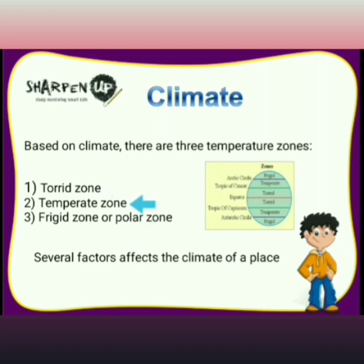The second zone is the temperate zone, where the sun is never directly overhead and the climate is mild, generally ranging from warm to cool. The four annual seasons — spring, summer, autumn, and winter — occur in these areas. The north temperate zone includes Great Britain, Europe, northern Asia, North America, and northern Mexico.